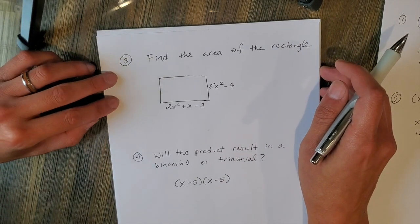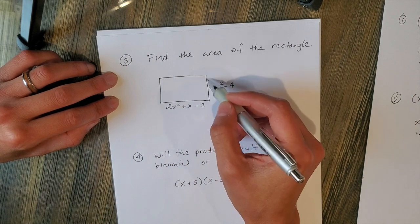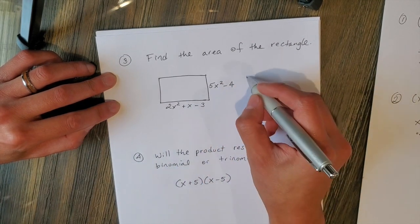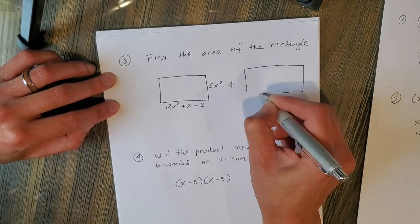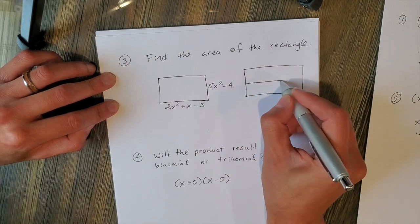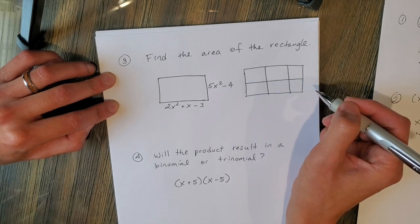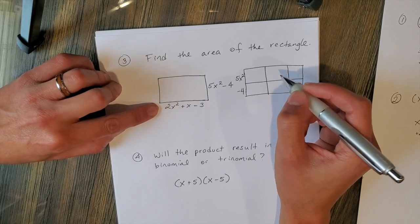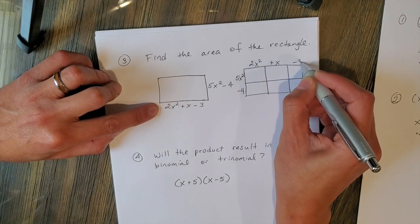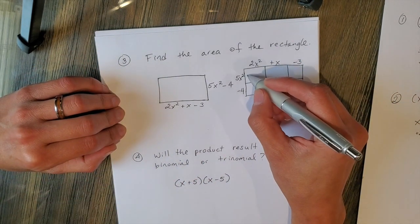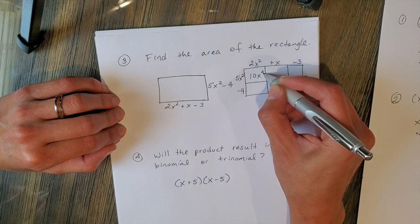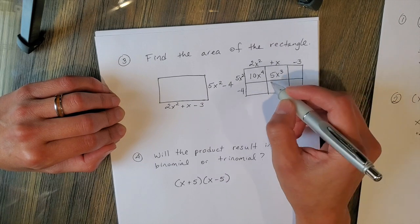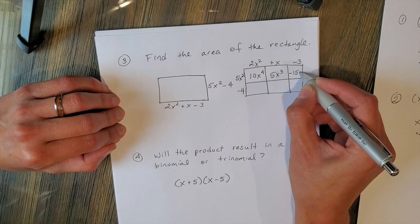Find the area of the rectangle. Remember, to find the area of a rectangle you multiply length times width, or base times height. I have a binomial and a trinomial, so I'm going to use a 2 by 3 box with two rows and three columns. I'll fill in the information: 5x squared minus 4 along the side, and 2x squared plus x minus 3 along the top. Now let's multiply.